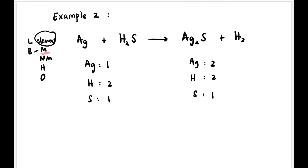Let's balance starting from metal. We have silver as the metal — one Ag on the left, two Ag on the right. So on the left we multiply by two, placing coefficient 2 in front, and now two and two are balanced for Ag. Moving on to non-metal: sulfur — one on the left, one on the right, balanced. Hydrogen — one on the left, two on the right — wait, actually two and two, balanced.